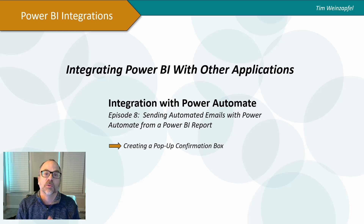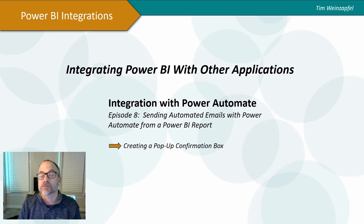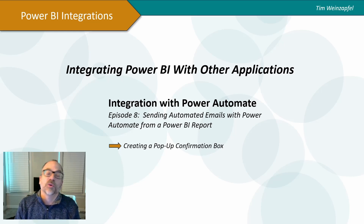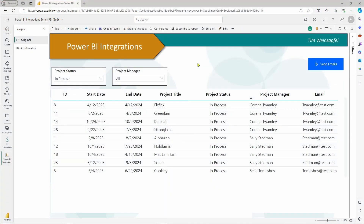One of the issues you will run into when you embed a Power Automate flow in your report via a button is there is no confirmation when you press it. In this video I will show how you can actually create one. Let me give you an example of the first issue that can happen and what can go wrong when you add this button from Power Automate to send automated emails.